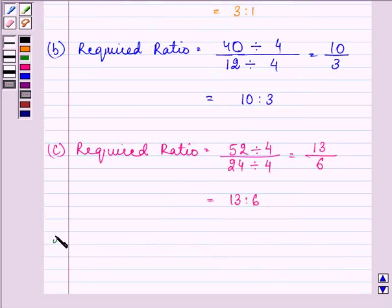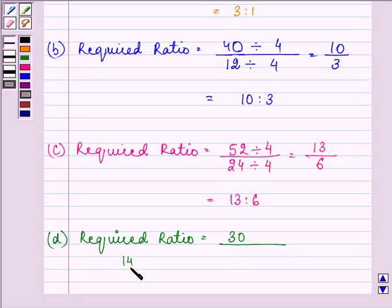And lastly, we need to find out the ratio age of the father to the age of son when father was 30 years old. That means 12 years ago. Right now, the son is 14 years old, and 12 years ago, he would have been 2 years. So, dividing by their HCF, here the HCF is 2. So, we have 15 over 1. That is 15 is to 1.